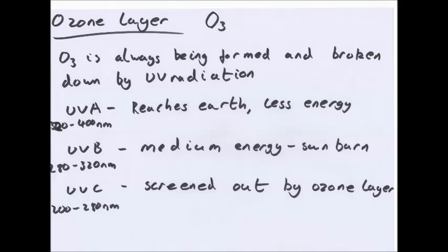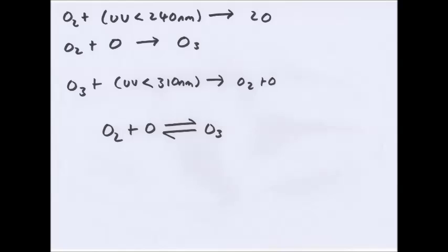Formation of ozone. O2 and any UV light which is less than 240 nanometres will form two single oxygen molecules. These oxygen molecules will then react with oxygen itself to become O3 or ozone. And the opposite, if ozone comes into contact with ultraviolet light which is smaller than 310 nanometres, it will form O2 and O. So you get an equilibrium reaction of O2 plus O becomes O3.